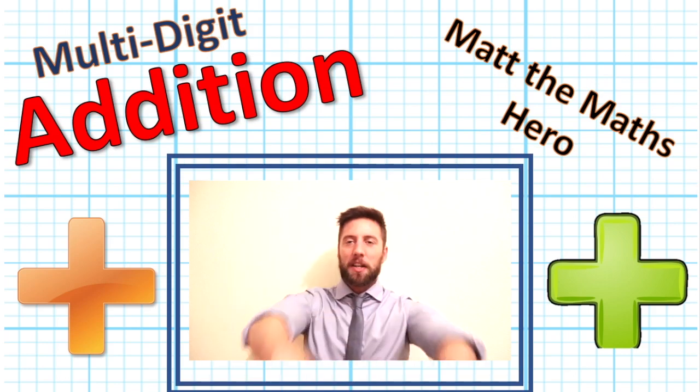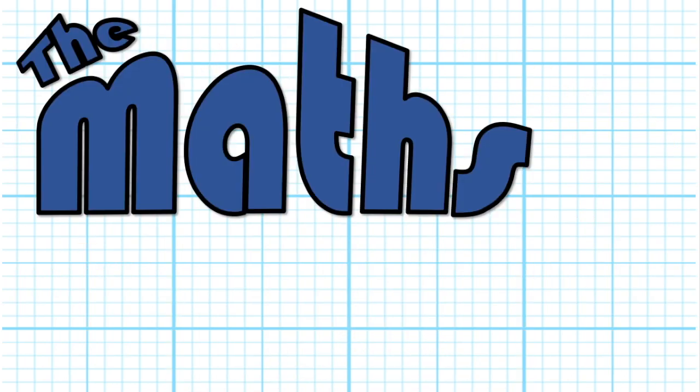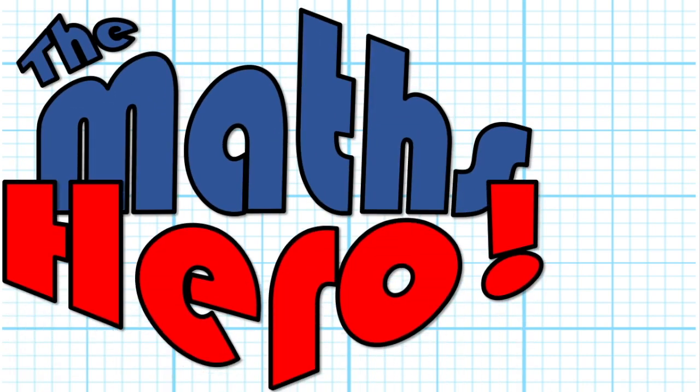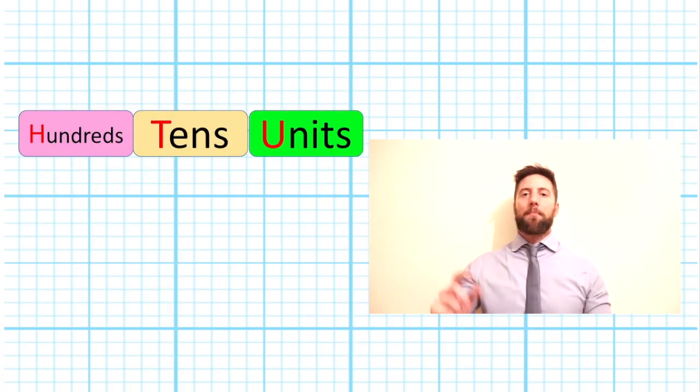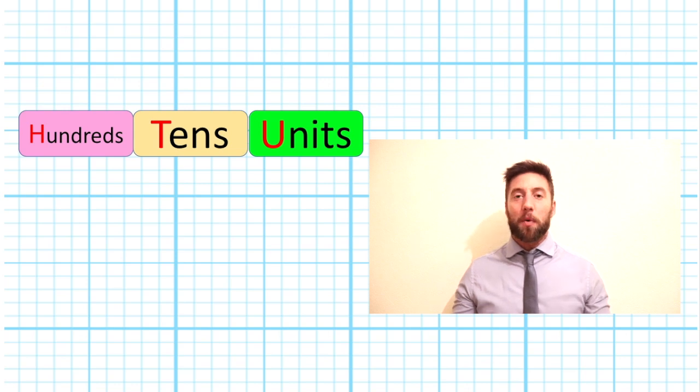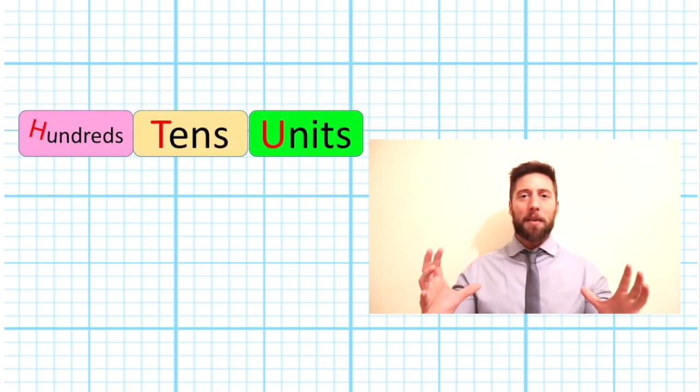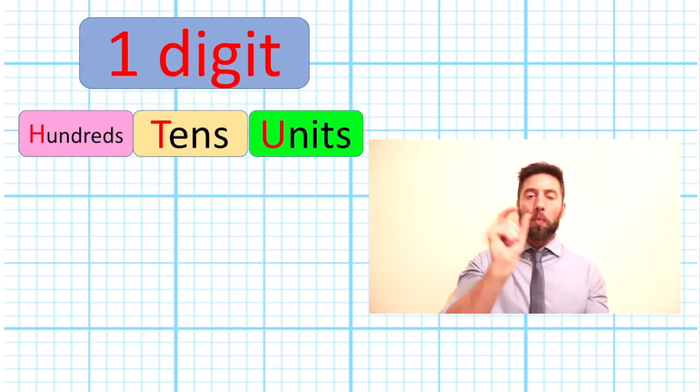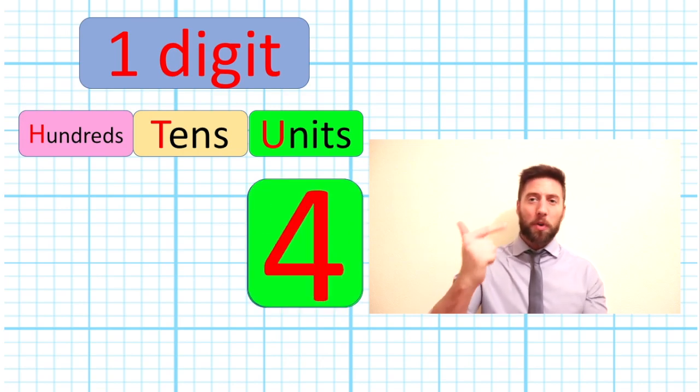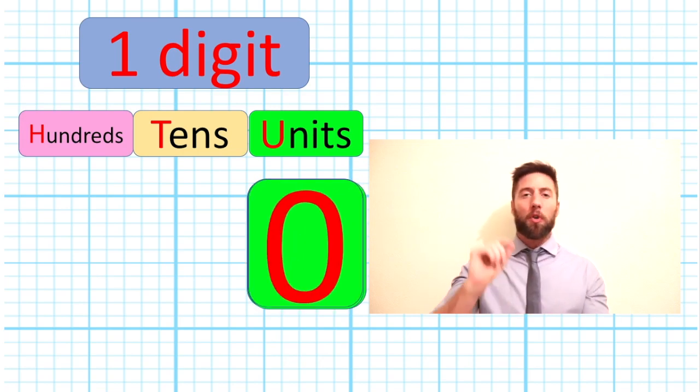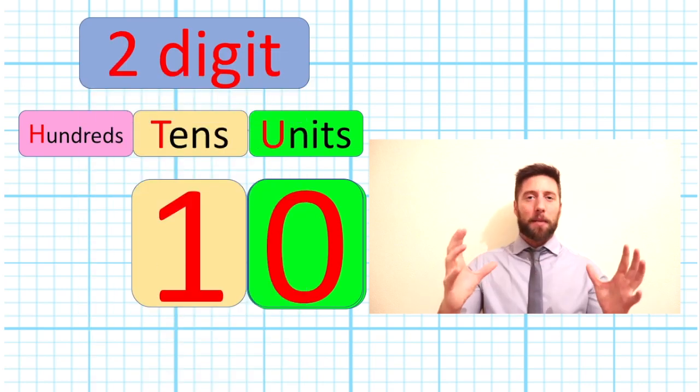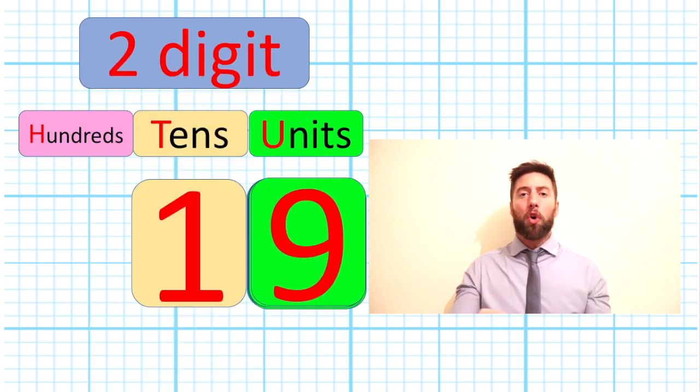Before we can do anything, what is a multi-digit? Well, a multi-digit is any number that's got more than one digit place. So one to nine are all single digit numbers. Anything above that - ten, eleven, twelve - all multi-digit.